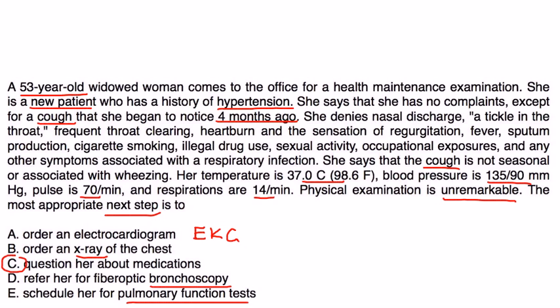The simplest thing and the most appropriate thing is ask her about her medications. Because she could be on an ACE inhibitor, and she does have a history of hypertension. So it's very possible that she does have that on her medication list, and that's what's causing the cough.